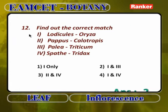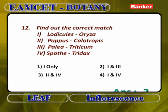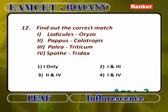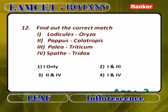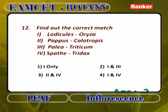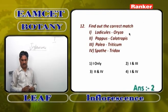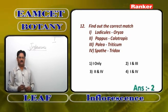Find out the correct match: lodicules in oryza (1) is correct — the reduced perianth lobes in compound spike inflorescence of any grass plant like oryza are called lodicules. Pappus cannot be seen in calotropis — pappus means hairy persistent calyx, not present in calotropis. Palea in triticum (3) is correct — reduced bracteoles in compound spike inflorescence are called palea. Spathe is found only in spadix inflorescence, not in tridax (which has head inflorescence). Answers are 1 and 3.